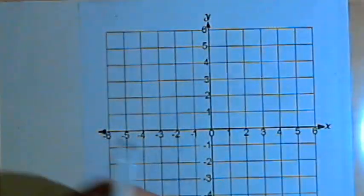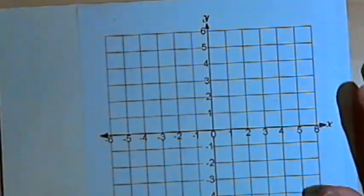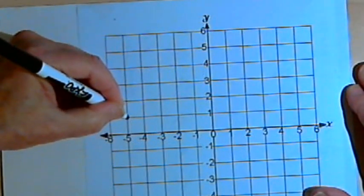So if I have to pick my pencil up, or my marker, then we say the function is discontinuous. This graph, for instance, would be discontinuous.